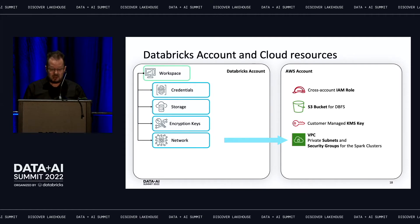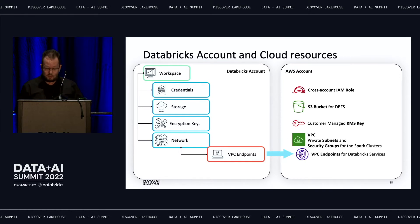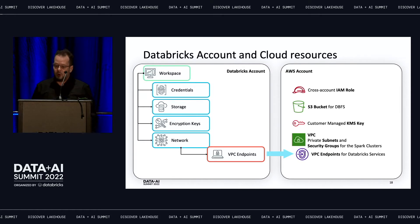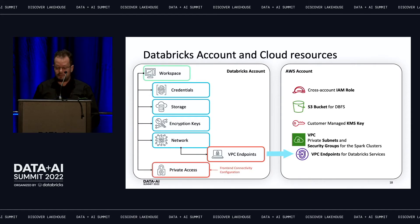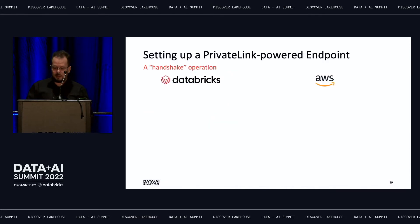For PrivateLink, there are two additional objects. First, VPC endpoint configurations, which are part of your network configuration and refer to the corresponding VPC endpoints on AWS. Second, the private access settings configuration, which specifies whether public access to the front end is allowed and which VPC endpoints specifically can access the Databricks REST API and web app. To set up a VPC endpoint, you need to perform operations on both the AWS and Databricks sides.